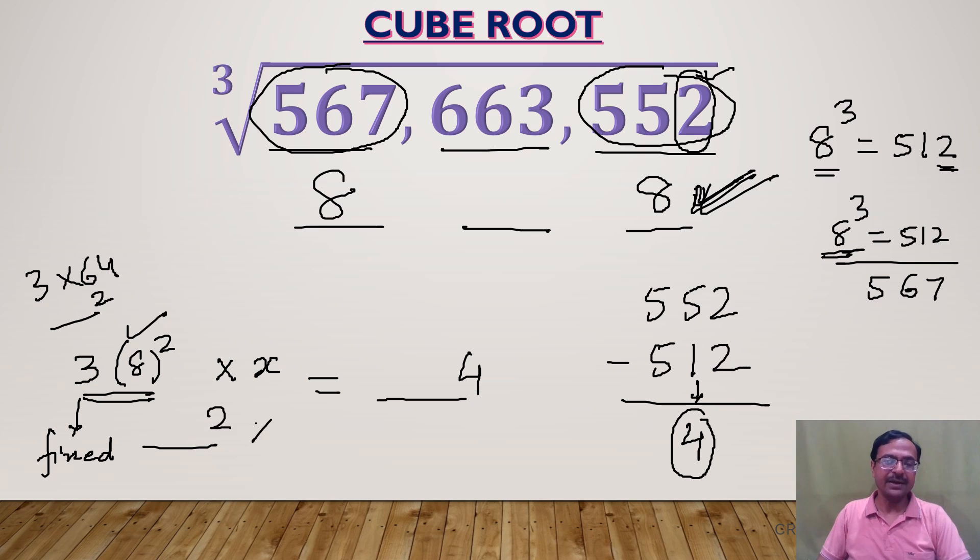And I need to multiply that by x to get me a number ending in 4. Now very easy, right? 2 times 2 is going to get me a number ending in 4, and therefore the middle digit is 2. The cube root of 567,663,552 is 828, friends.